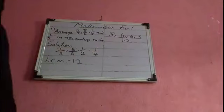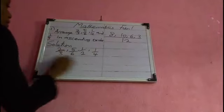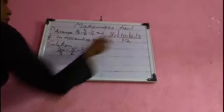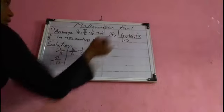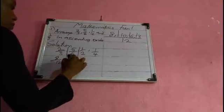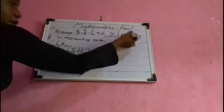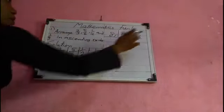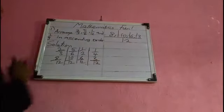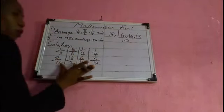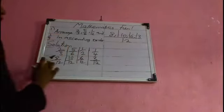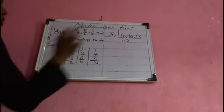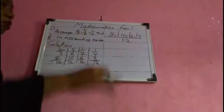Let's distribute them back to their parents so we don't mix them up before we start arranging. So 2/3 becomes 8/12, 5/6 becomes 10/12, 1/2 becomes 6/12, and 1/4 becomes 3/12. Now that we have a common denominator, the LCM has made them all family members — they all share the denominator 12.